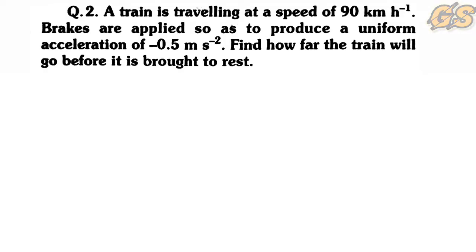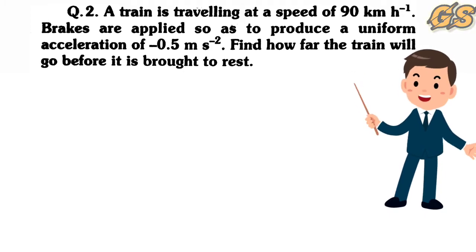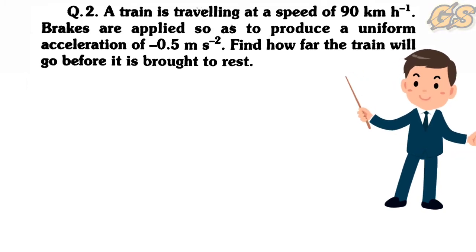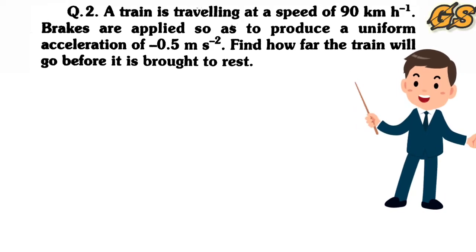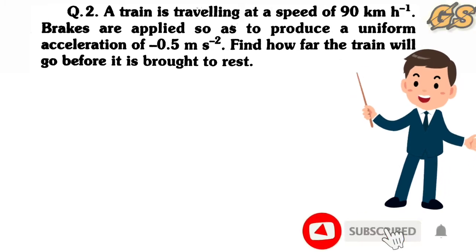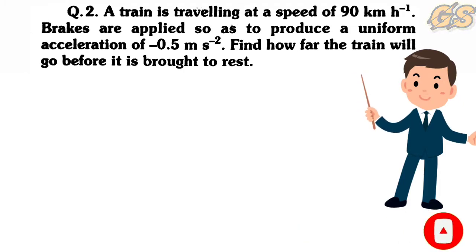Second numerical: A train is traveling at a speed of 90 km/h. Brakes are applied so as to produce a uniform acceleration of −0.5 m/s². Find how far the train will go before it is brought to rest. The initial speed u = 90 km/h and retardation a = −0.5 m/s².